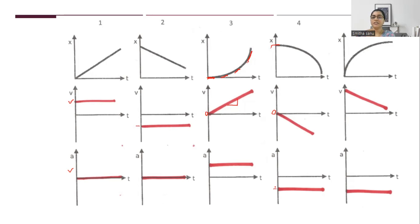If you see the next graph, velocity starts with a high positive value, then gradually becomes flat — approaching zero — and the slope is negative.